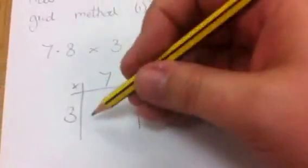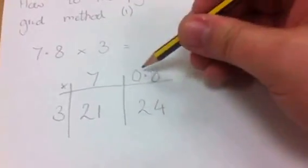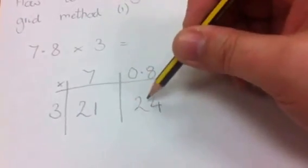The first part is 3 times 7, which is 21. And the next part, I know that 3 times 8 is 24, but it's 0.8, so this has to be 10 times smaller.